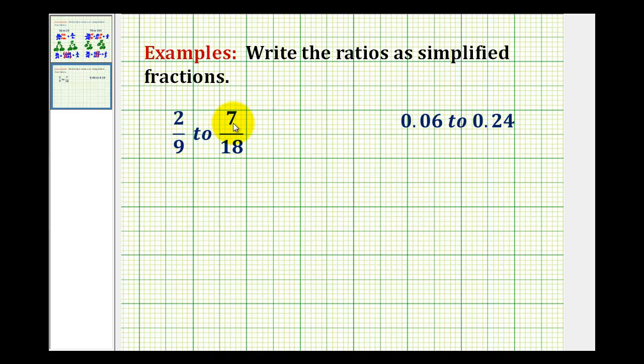So for the ratio 2/9 to 7/18, we'll write this as a fraction where we have 2/9 over 7/18, but we can't leave it in this form. Remember that a fraction bar represents division. So this is the same as 2/9 divided by 7/18, which as a multiplication problem would be 2/9 times the reciprocal, which would be 18/7.